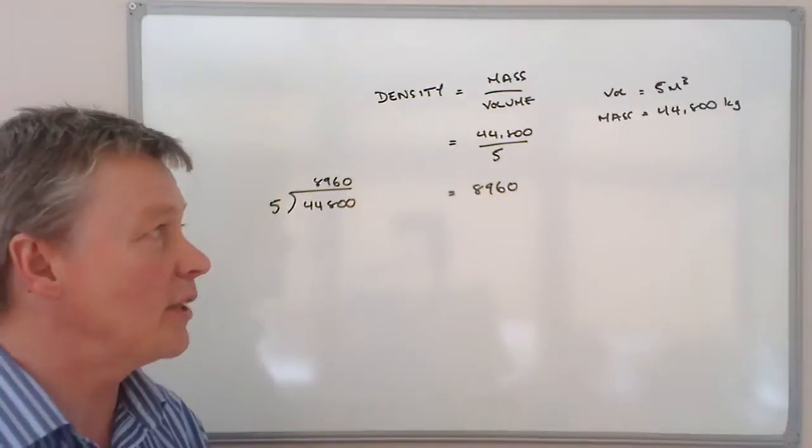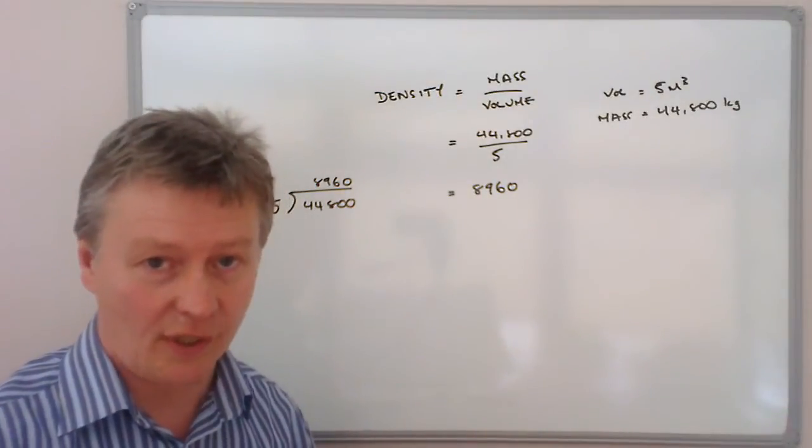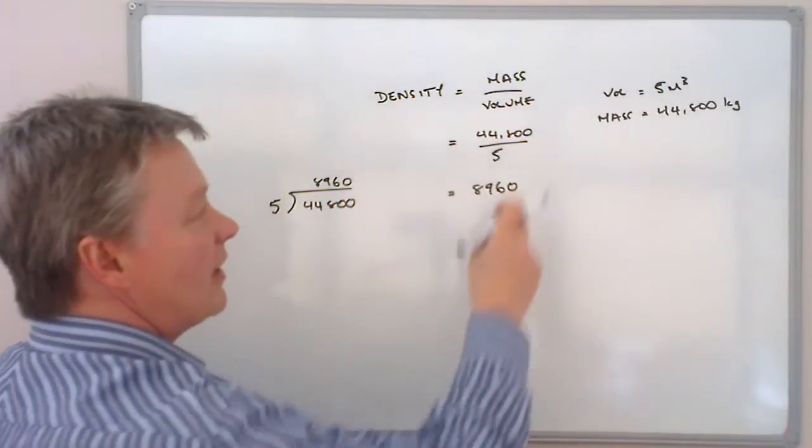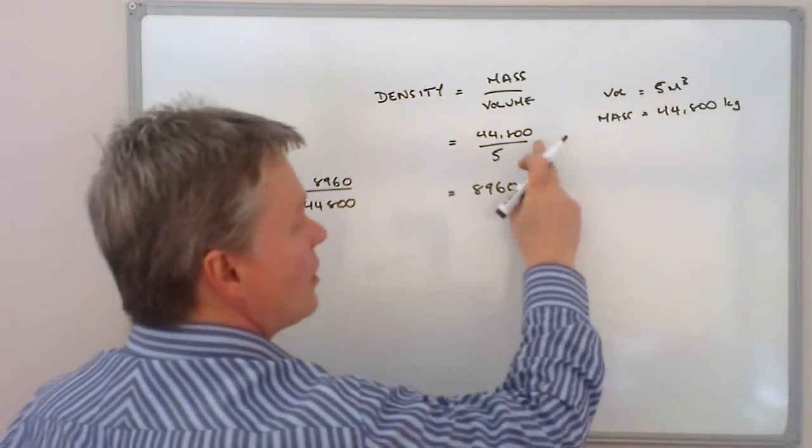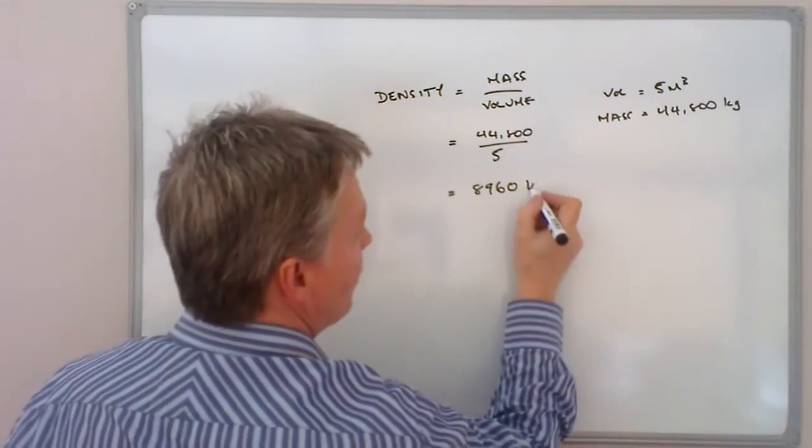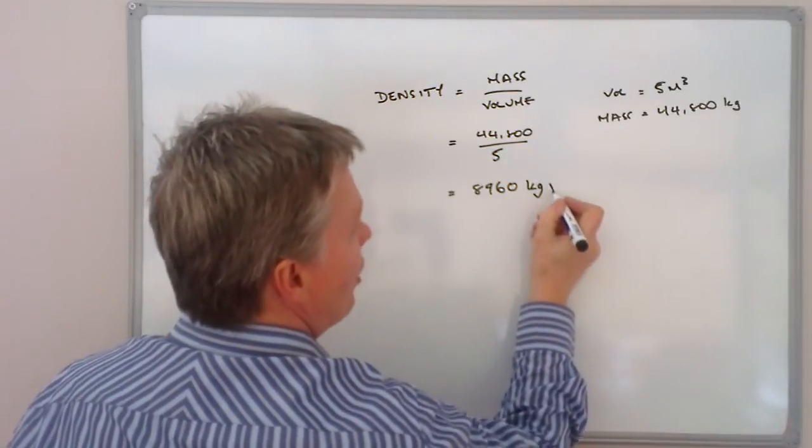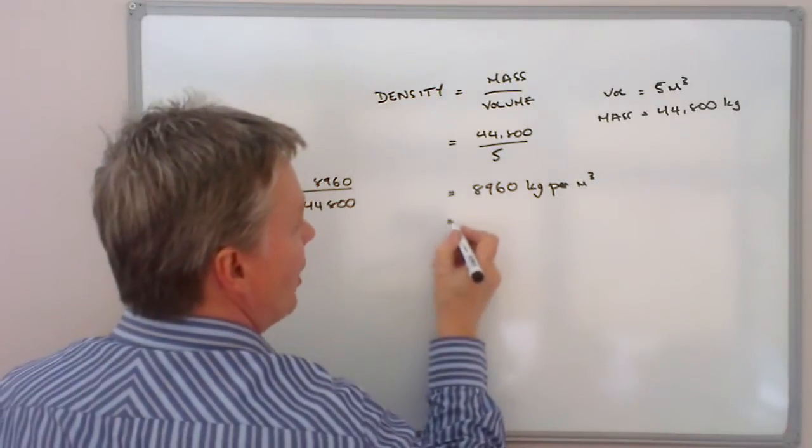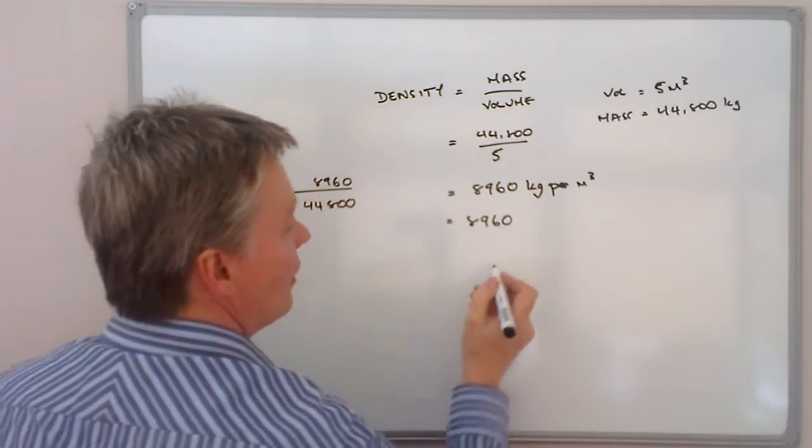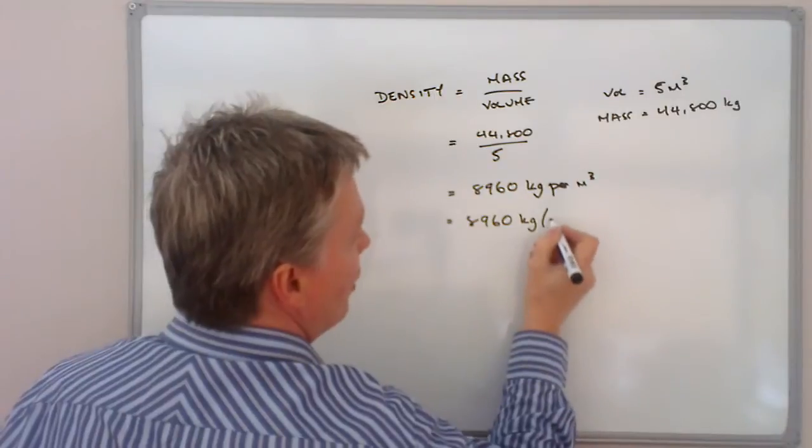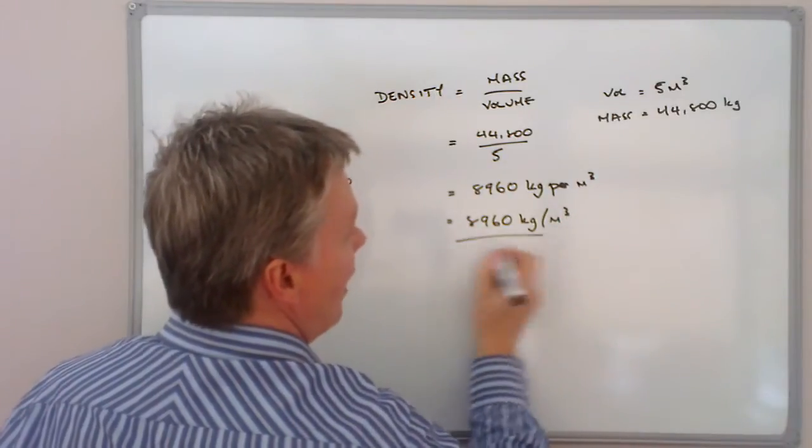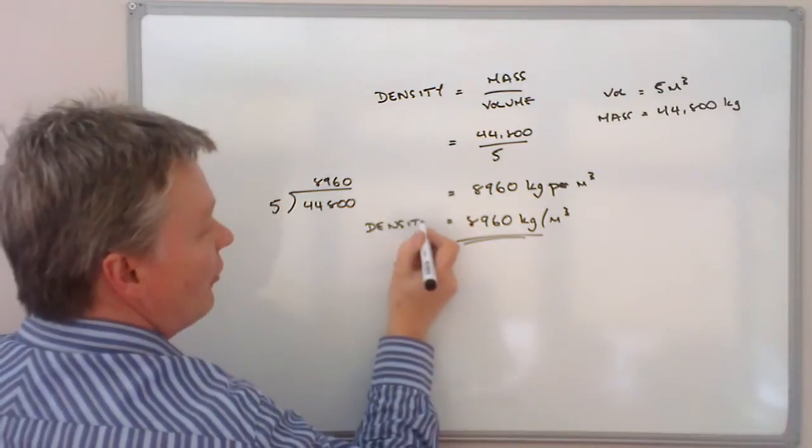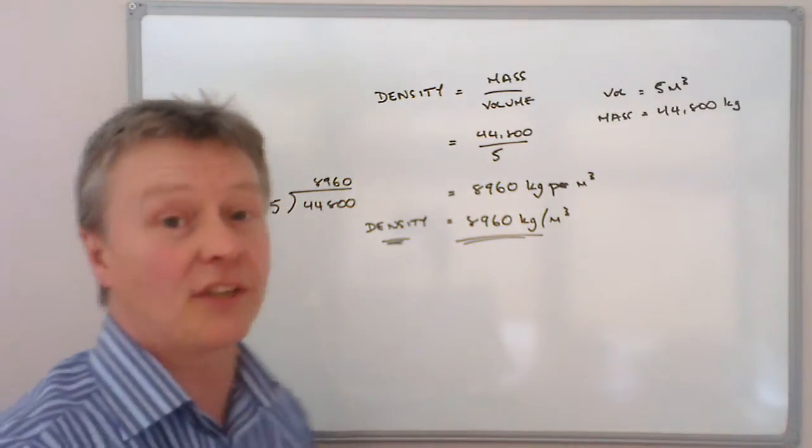You need to also make sure that you add the appropriate units. So the appropriate unit for density for this calculation is going to be kilograms per metre cubed. So it would be 8960 kilograms per metre cubed as the measurement of density for this particular large piece of copper.